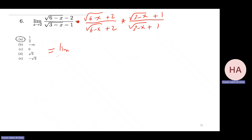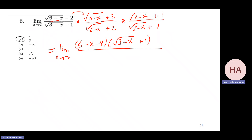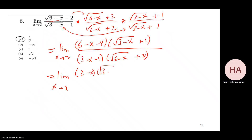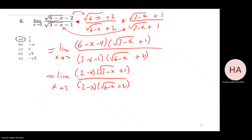This next problem requires rationalizing both the denominator and the numerator. Multiplying carefully, we get six minus x minus four in the numerator, leaving three minus x minus one times the rest, giving two minus x. After cancellation and substitution at x equals two, the numerator becomes six minus two times square root of four plus two plus four, so the answer is one-half.